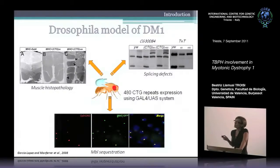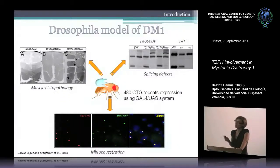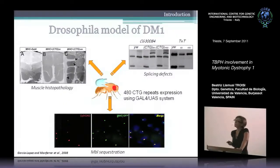We reported that muscle-blind — specifically the muscle-blind C isoform — co-localizes with the CTG repeats, so muscle-blind is sequestered by these repeats.